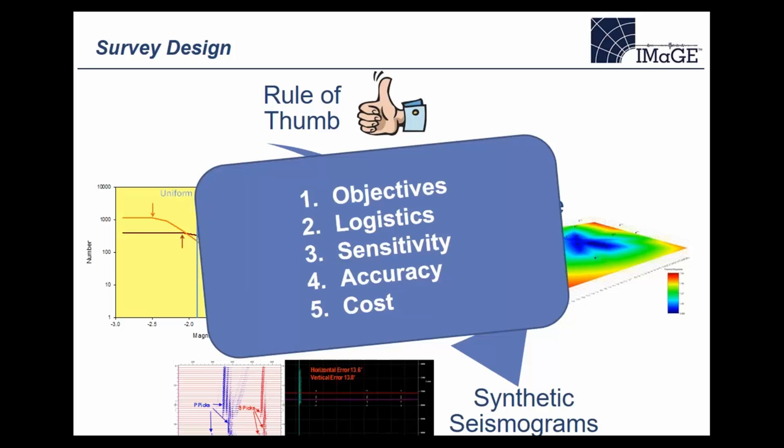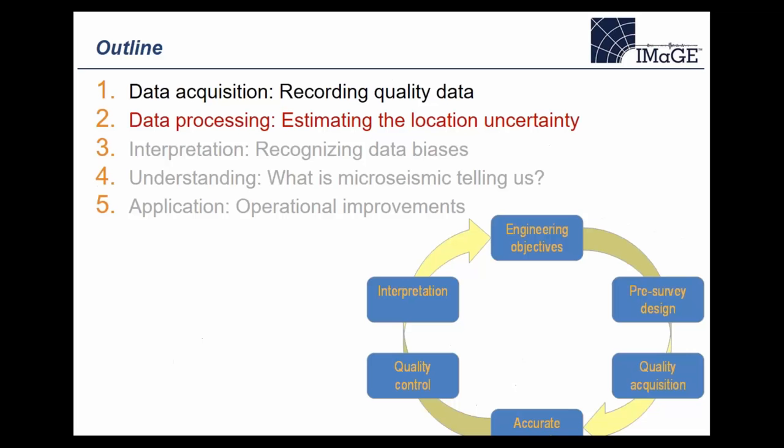In terms of performing a survey design before data acquisition: start with objectives — for instance, is fracture height particularly important to be defined? Then look at logistics to find what the monitoring geometry options would be, compute the sensitivity or estimate the sensitivity and accuracy for the different arrays and rank them, and then obviously the cost of the different scenarios also needs to be considered.